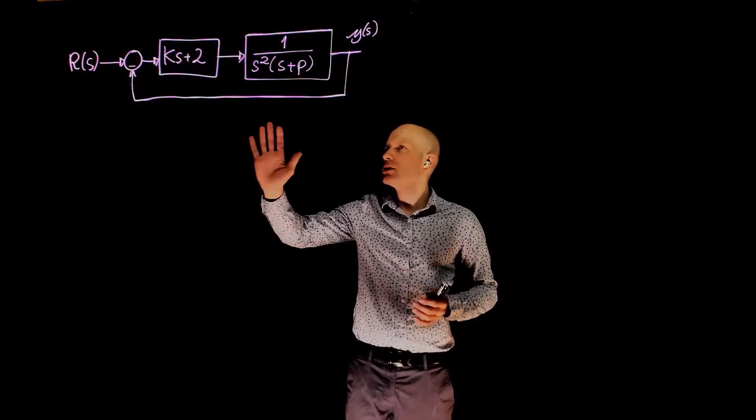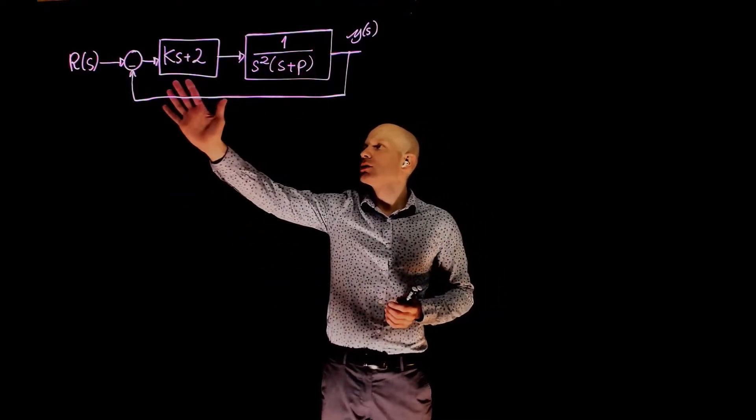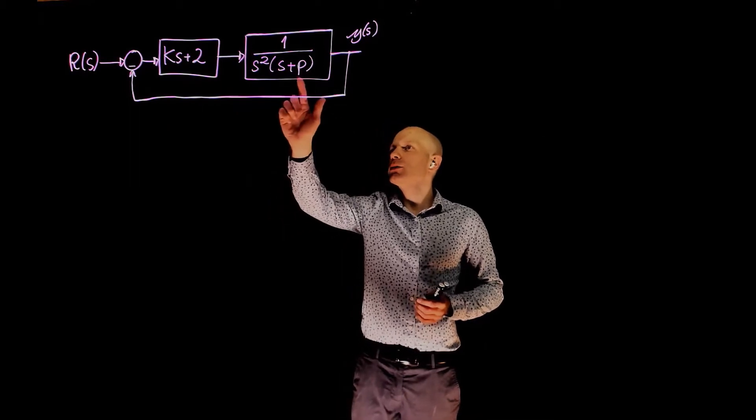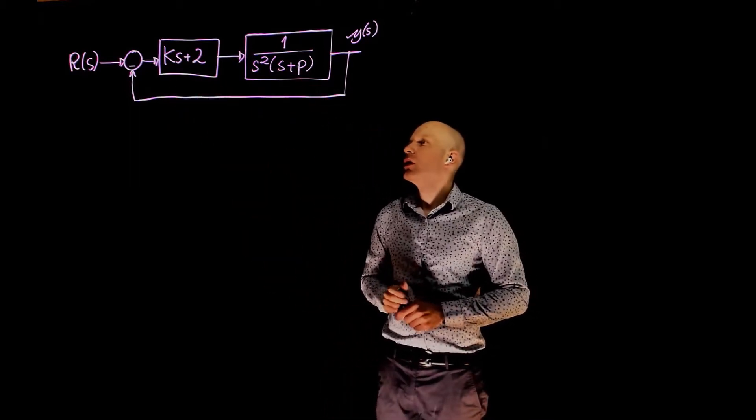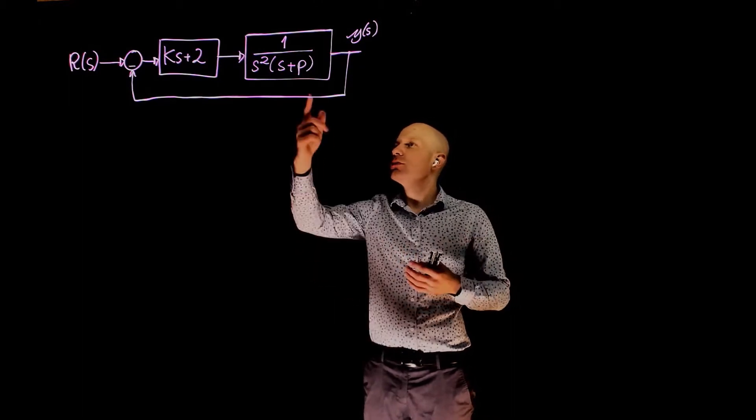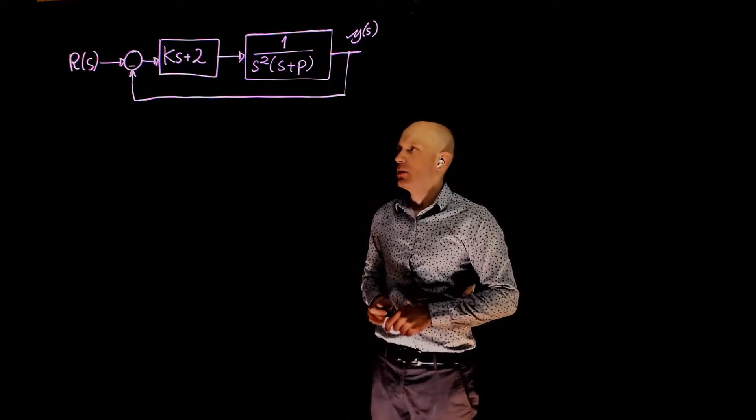Here we have a closed-loop feedback system, here's the plant and here's the controller. The plant has a parameter p and the controller has a parameter k. The question is, what is the range of p and k that will make the closed-loop system stable?